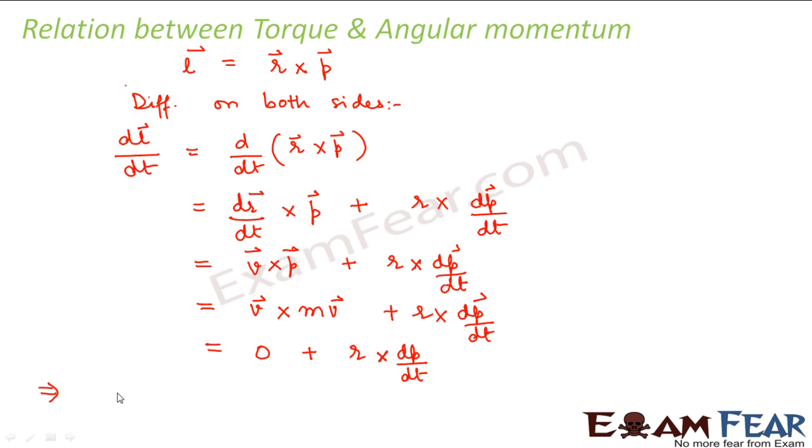So therefore we get dL by dt is equal to R cross. What is dP by dt? From Newton's second law, we know that dP by dt is equal to force external. We proved Newton's second law in case of rotational motion as well, that is dP by dt is equal to F. So dL by dt is equal to R cross F. What is R cross F? That is torque. We defined it just some time back.